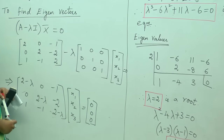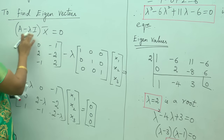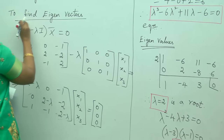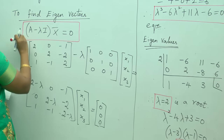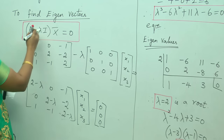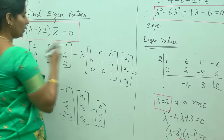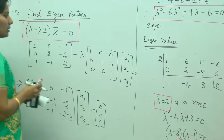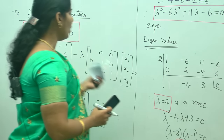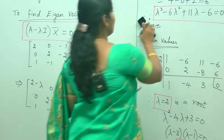To find the eigenvectors, the equation is A minus lambda I times x-bar equals 0, where A is the given matrix, lambda is the scalar, and I is the unit matrix. For each eigenvalue, I am going to find the corresponding eigenvector.